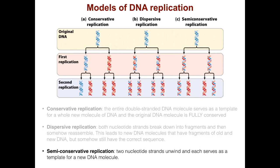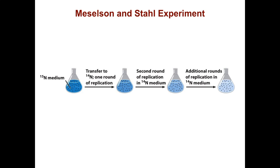A third model is semi-conservative replication. Here, the two nucleotide strands unwind and each serves as a template for a new DNA molecule. Messelson and Stahl needed a way to distinguish old and new DNA to help figure out which of these models was correct.